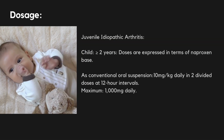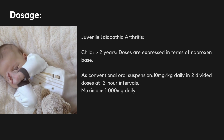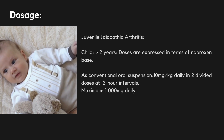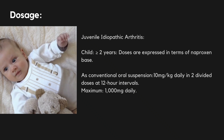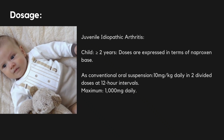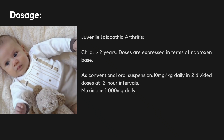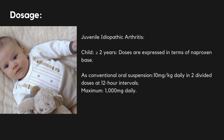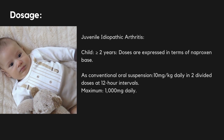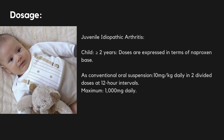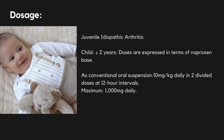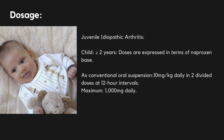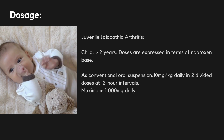Juvenile Idiopathic Arthritis. Child (greater than or equal to 2 years): doses are expressed in terms of naproxen base. As conventional oral suspension, 10 mg per kg daily in divided doses at 12-hour intervals. Maximum 1000 mg daily.